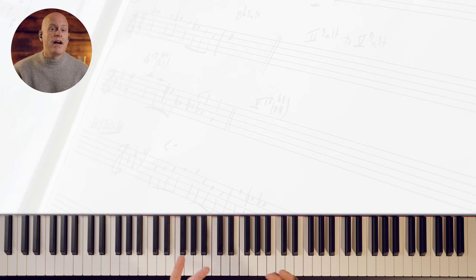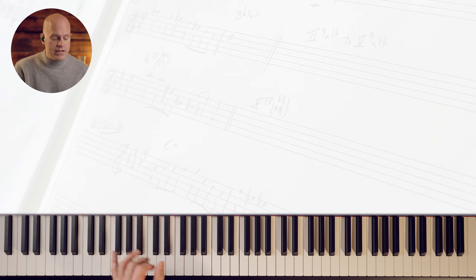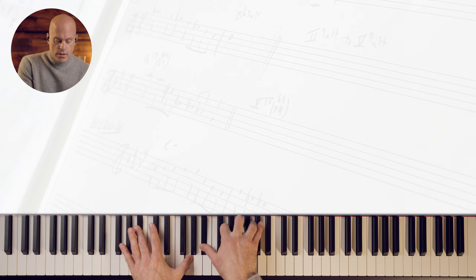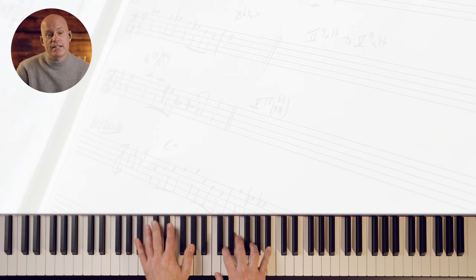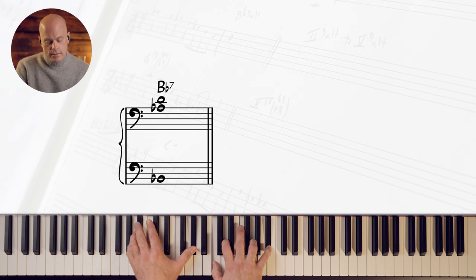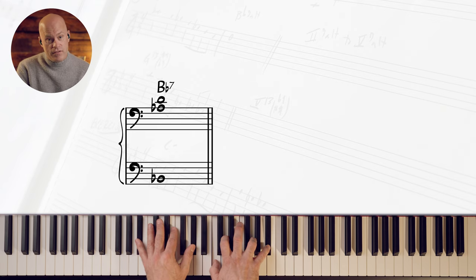Tritone substitution is on the five chord of a two, five, one or any five going to one. So if we're in the key of E flat, the five chord is B flat seven. One, five.